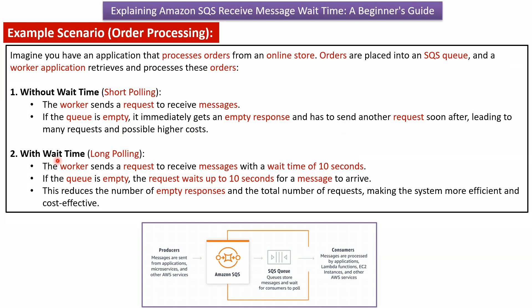The second scenario is with wait time, which is long polling. The worker sends a request to receive messages with a wait time of 10 seconds. If the queue is empty, the request waits up to 10 seconds for a new message to arrive. This reduces the number of empty responses and the total number of requests, making the system more efficient and cost effective.